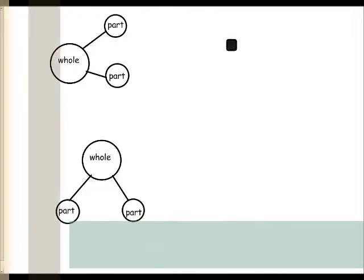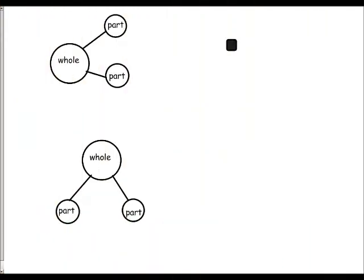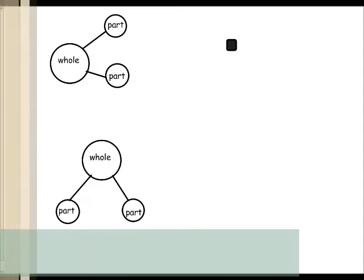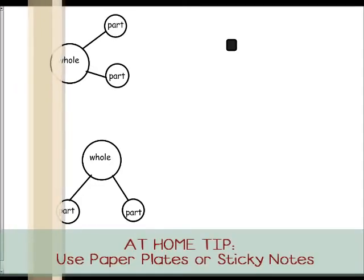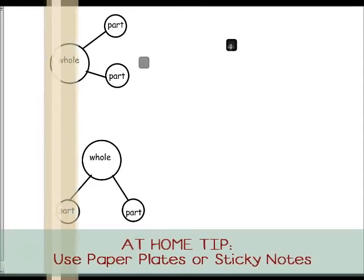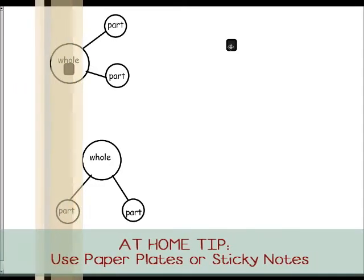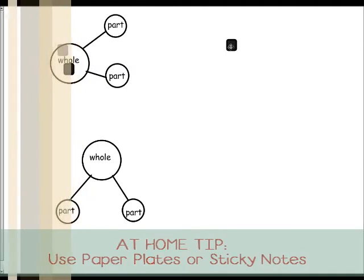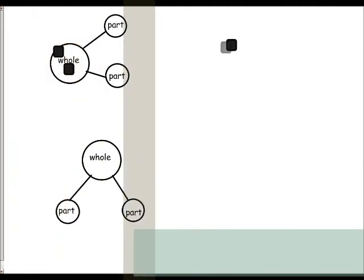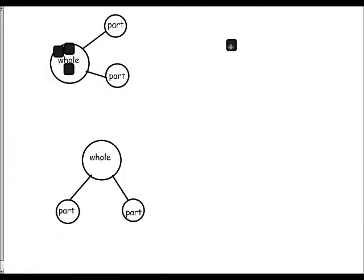When we say understand part-whole relationships and build relational understanding, we mean in a picture form like this. In the beginning you could do it at home with paper plates or sticky notes — for example, if you want to show the whole is the number four, you put four sticky notes in the whole.